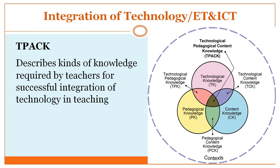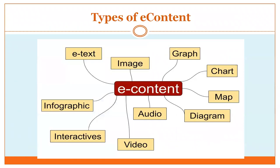This is a simple mind map or flow chart showing the types of e-content that can be created: e-text, image, graph, chart, map, diagram, audio, video, interactives, infographic, etc. Anything in electronic form is called e-content. Earlier we had hard copy text and images on paper; when converted to electronic form, they become e-text, e-chart, e-graph, and so on.